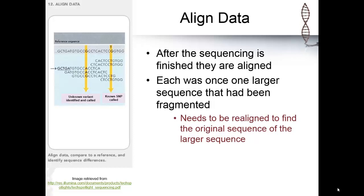The next step is to align the data. Remember that the various sequences that are being read by the machine are all from the same larger sequence of interest. Only the shorter strands of DNA can be sequenced, therefore they had to be fragmented. After the reads have been collected by the sequencing machine, it then needs to be aligned to find the sequence of the larger sequence of interest.